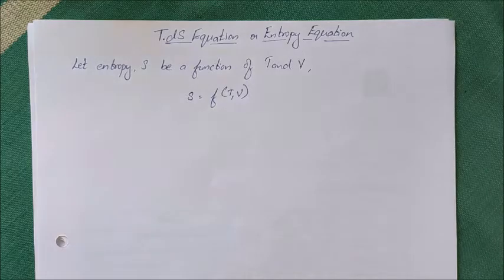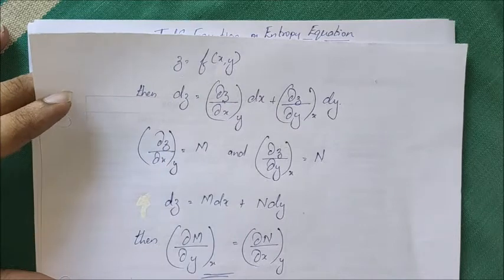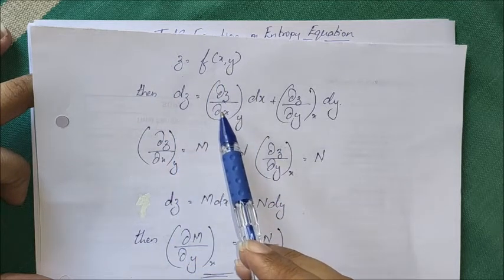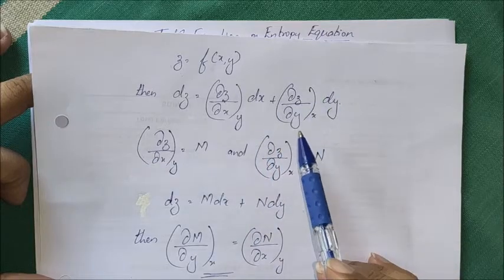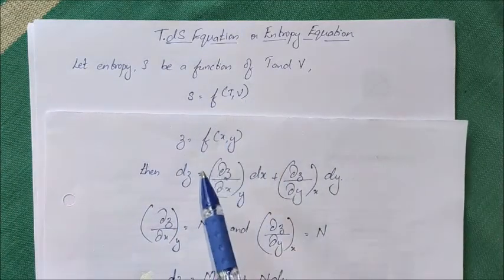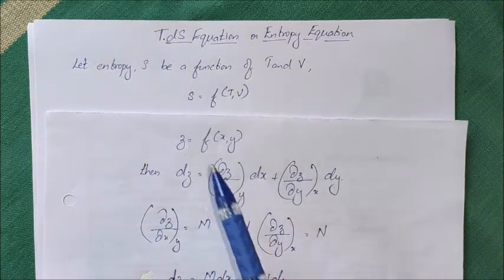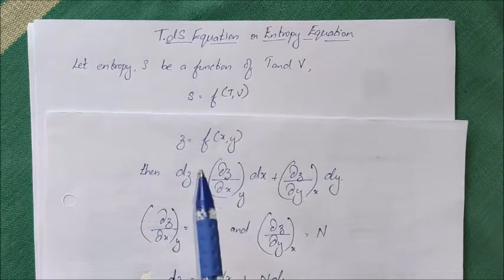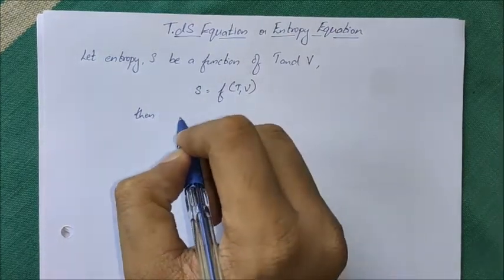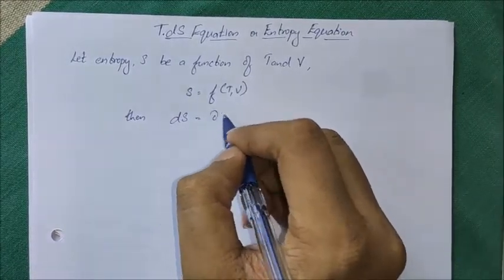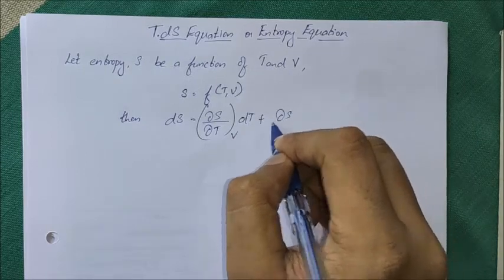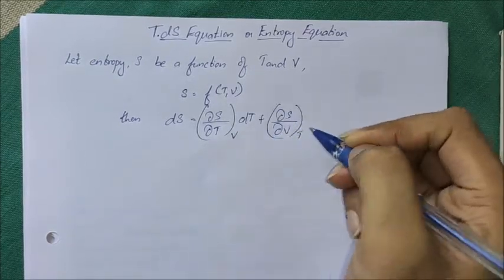In my previous lecture on Maxwell's equations, I defined some mathematical relations. If Z is a function of X and Y, then we can write dZ equal to (∂Z/∂X)_Y dx plus (∂Z/∂Y)_X dy. Similarly, since entropy S is a function of T and V, we can write dS equal to (∂S/∂T)_V dT plus (∂S/∂V)_T dV.